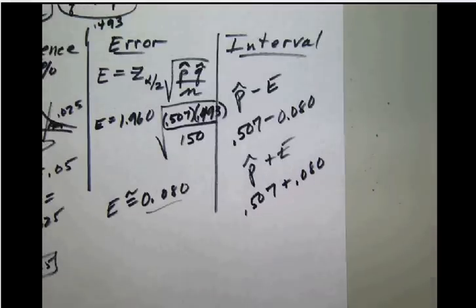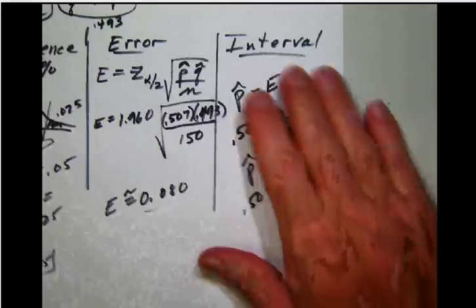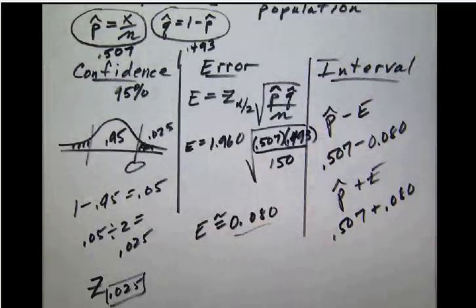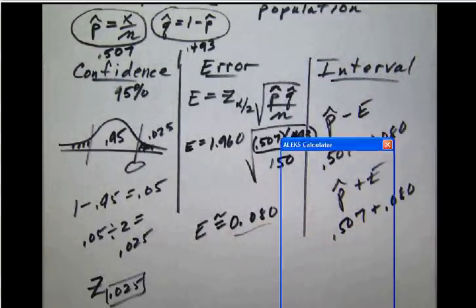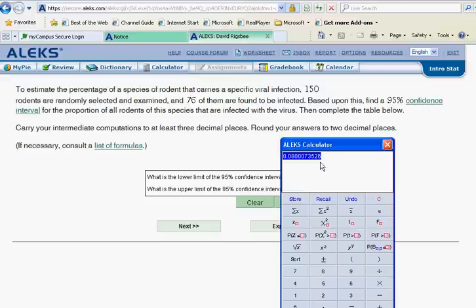Now we don't actually have to do that work. We can trust our Alex calculator to do that for us. In fact, we'll do it all in one step. So let's go back here. Here is our error. Let's don't round that. Let's simply store that, clear it, take our 0.507 and plus or minus what we had there in our recall. Let's calculate that.